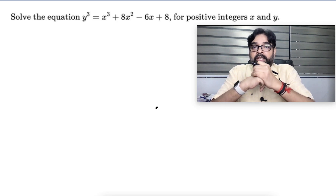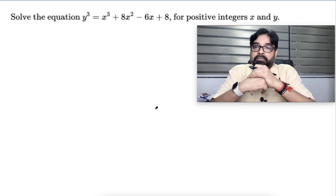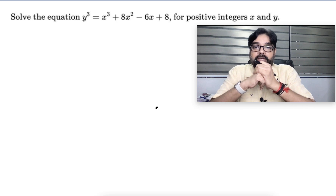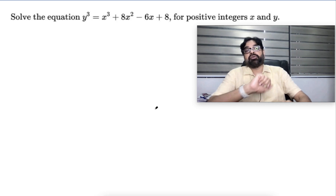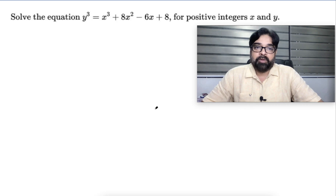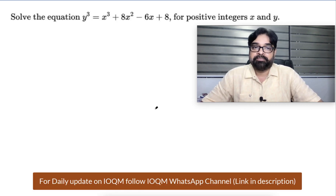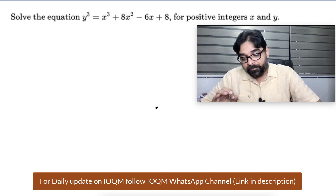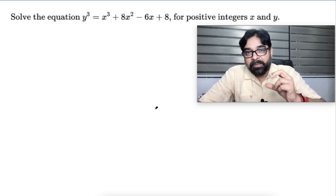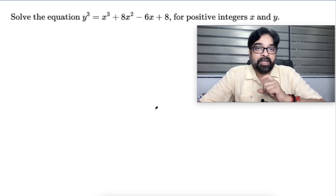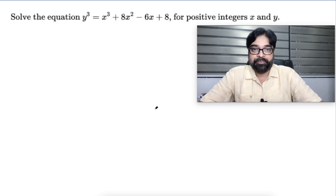This is a good question — an equation is given and you have to find the x and y values. In IOQM they may ask something like x plus y, but here it's simply given. The answer should be in two-digit form. To solve the equation for positive integers x and y, remember: a single equation with more than one variable has an infinite number of solutions, but we can add restrictions to get a finite answer. In this case, the restriction is that x and y are positive integers.